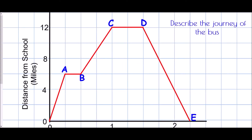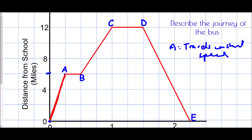Now we're going to look at a school bus travelling from school, collecting students, and coming back to school — we want to describe the journey as we go. Section A is a straight line moving away, so for A we have: travels at constant speed. We can also tell extra information — we can see how far they actually travelled. They started zero miles from school, and at the end of A they are six miles from school. So: travelled at constant speed, six miles.